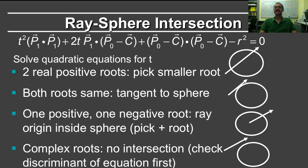First, let's consider the value at the bottom of the slide. So if the discriminant involves complex roots, so the discriminant is negative, then you should not take the square root in solving the quadratic equation. And what it means physically is that there is no intersection between the ray and the sphere.